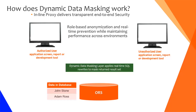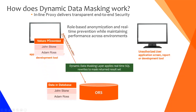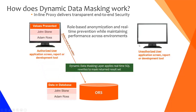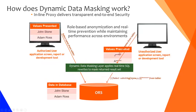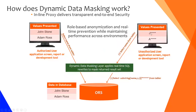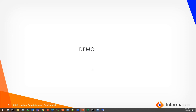Now let's see how it actually works. We have an ORS with data. When an authorized user makes a request to the ORS, it accepts them as an authorized user and sends the data back to the user screen without any masking rules applied. Whereas when an unauthorized user makes a request, the DDM intercepts it and applies the masking rule, providing the data back to the user with masking rules applied. Now let's go to the demo.